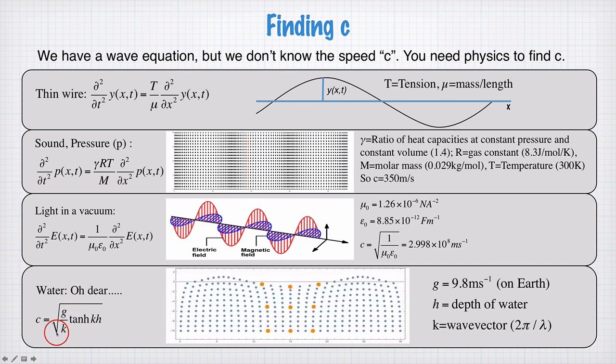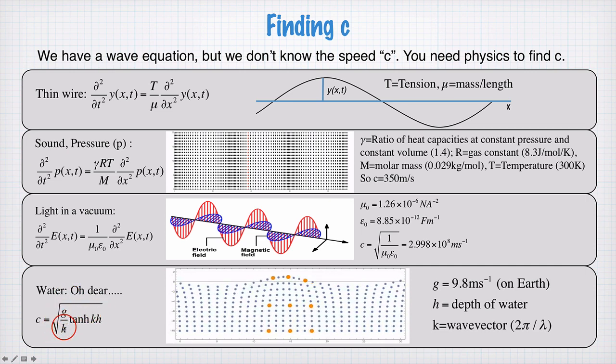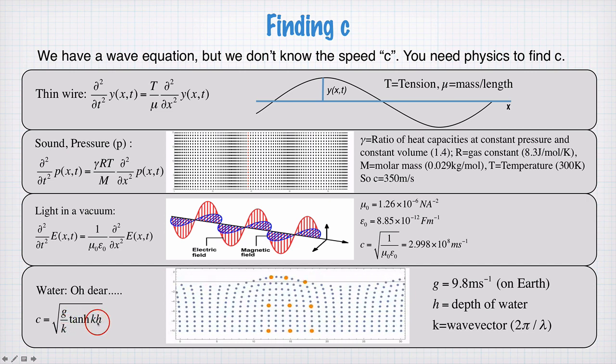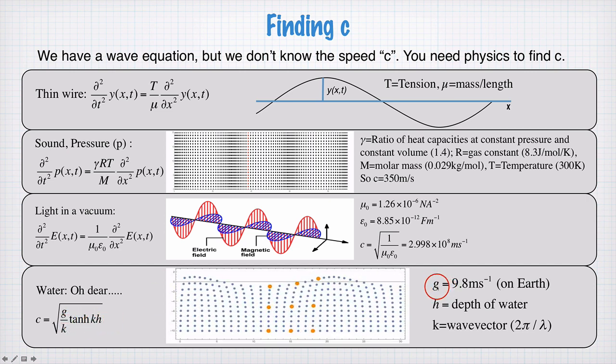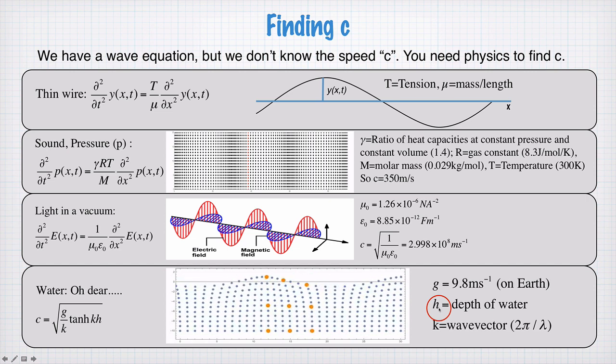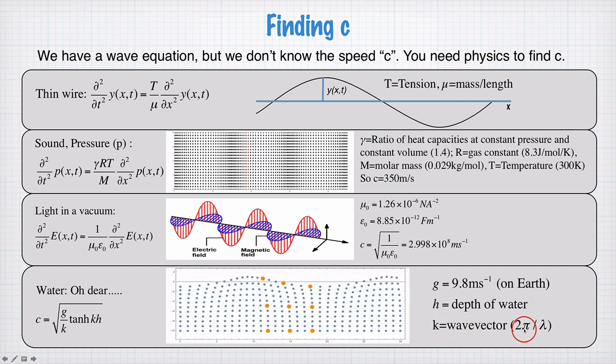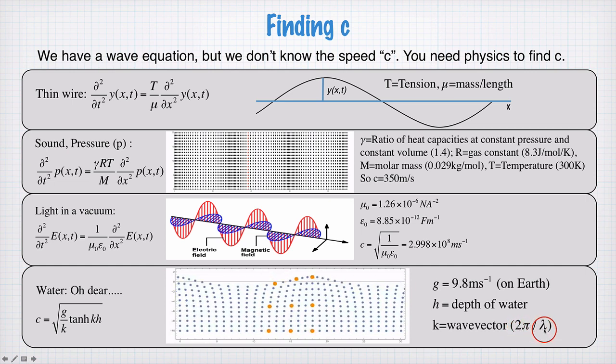The speed of this transverse wave is given by the square root of g divided by k multiplied by the hyperbolic tan, that's tanh, of k times h. g is acceleration due to gravity, h is the depth of the water, and k is the wave vector. So that is, for a sinusoidal wave, that's 2π divided by lambda.